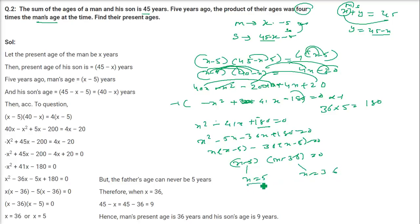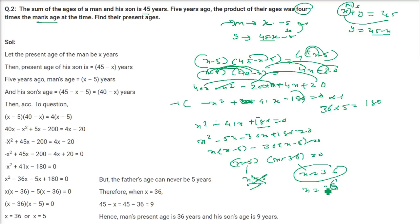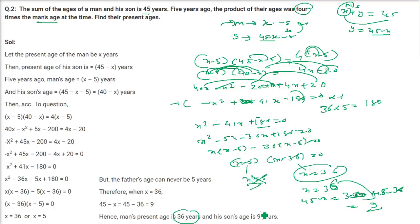Now X equals 5 would mean the father is 5 years old, which is not logical. So X equals 36 is the valid answer. The man's age is 36, and the son's age is 45 minus 36, which is 9 years. This is logical — 36 years for the man and 9 years for the son.